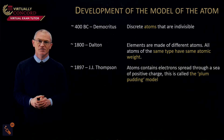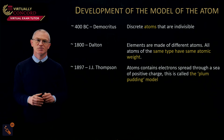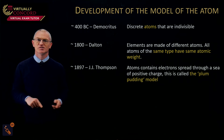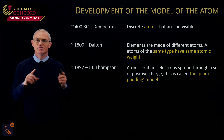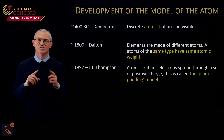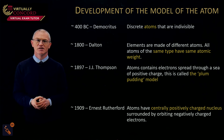Then we have J.J. Thomson, around 1897, who said that atoms contain electrons spread through a sea of positive charge — basically a sphere of positive charge. He called that the Plum-Pudding model: a sphere of positive charge with negative electrons spread throughout it.